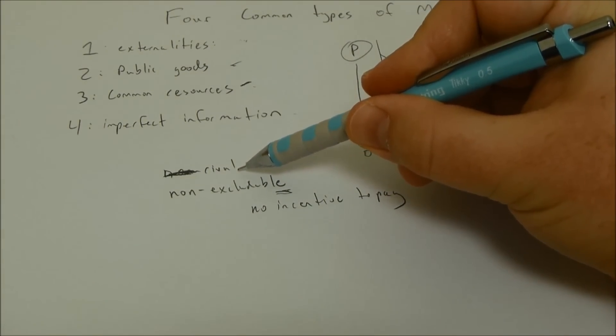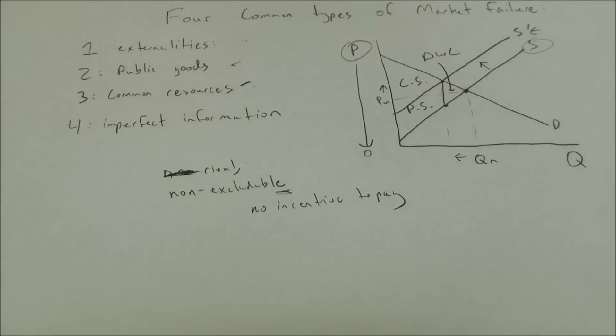They've used up that road, or it becomes congested. They've used up the road. Now you can't use it. That's an example of being rival.